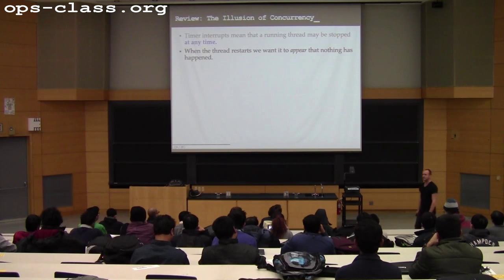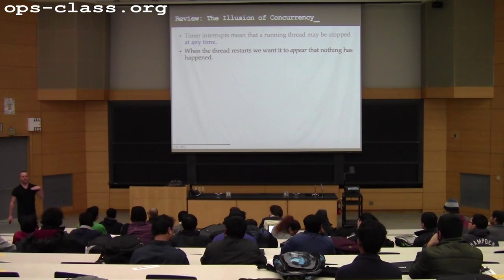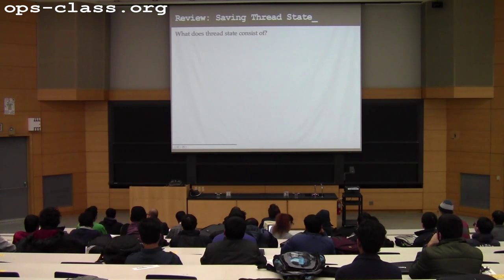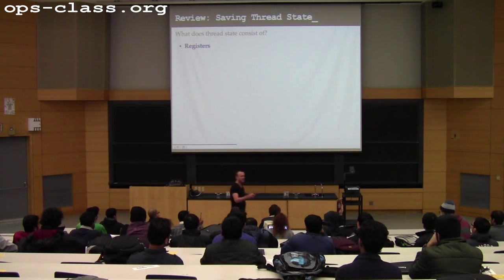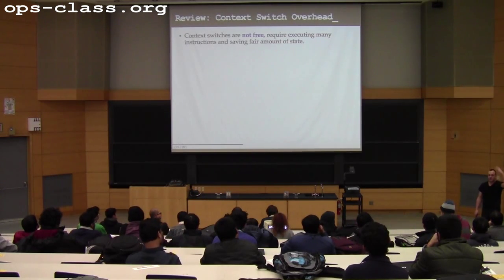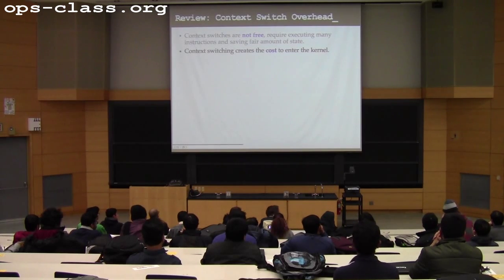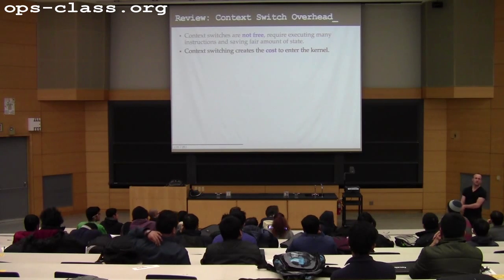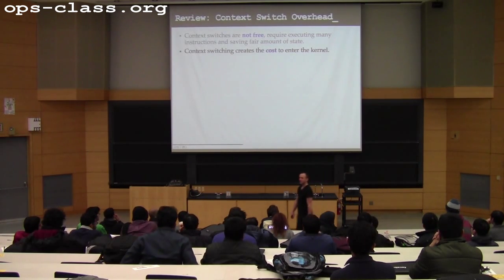There are certain invariants we want to preserve — for example, all the registers should be the same as when I stopped the thread. What thread state do I need to save to perform a context switch? I need to save the registers so I can reload them when the thread restarts, and the other piece of state is the stack. Those are the two pieces of private thread state. There's overhead to performing a context switch: I have to enter the kernel and save all this state. We'll come back to that when we talk about two different ways to implement multi-threading — one in user libraries, one in the kernel — and some pros and cons of each.